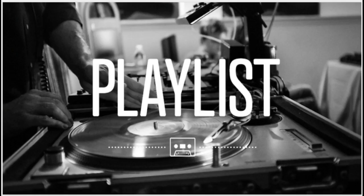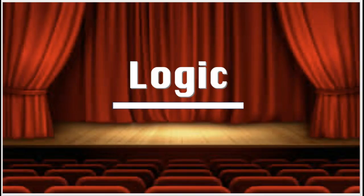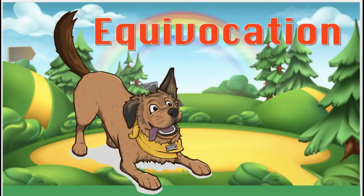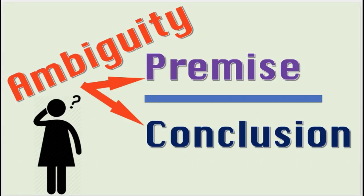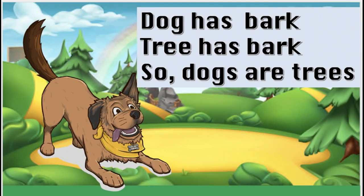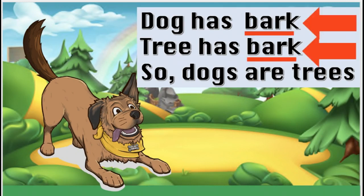Ladies and gentlemen, welcome back to this video series on logic. The fallacy of equivocation is the topic of this video. It's a fallacy of ambiguity. These fallacies arise from the use of ambiguous language in the premise or conclusion of an argument. The fallacy of equivocation is committed when the conclusion depends on a word or phrase being used in two different ways.